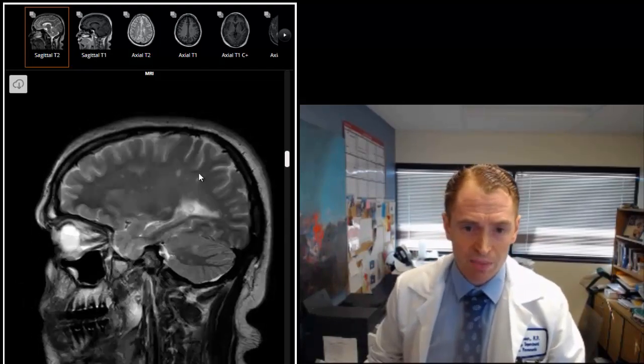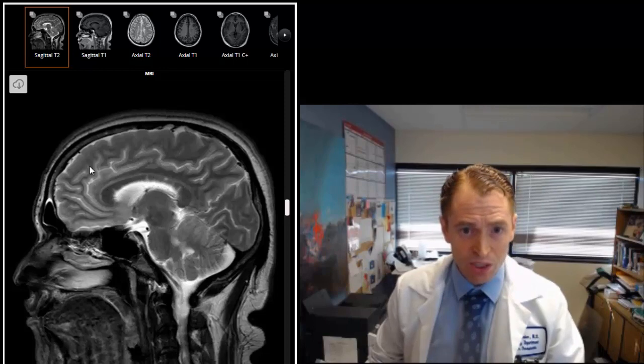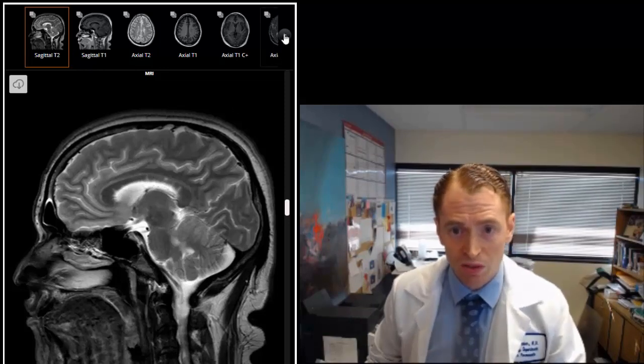You can see some of these other subcortical white matter lesions. When the lesions are sort of lined up like this they call it a white picket fence sign which is a classic sign of multiple sclerosis.